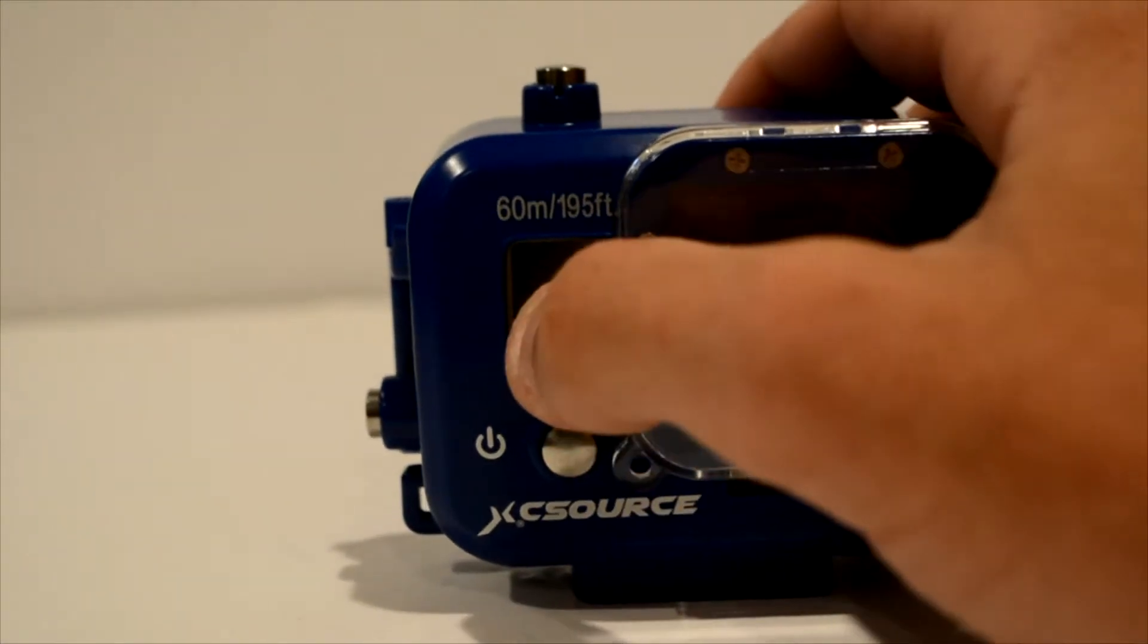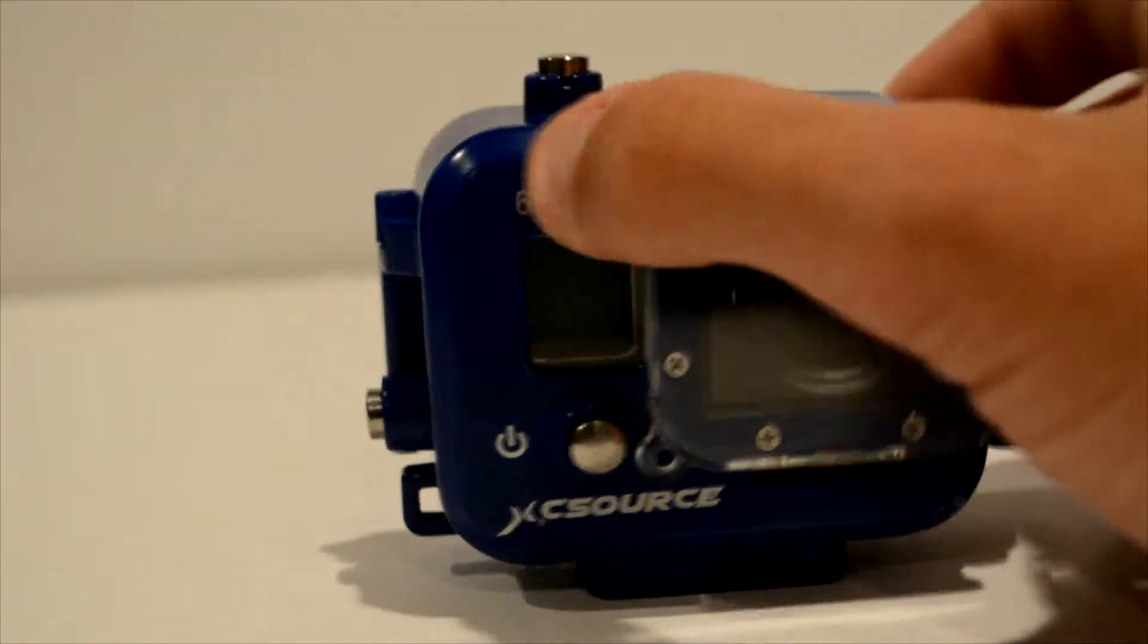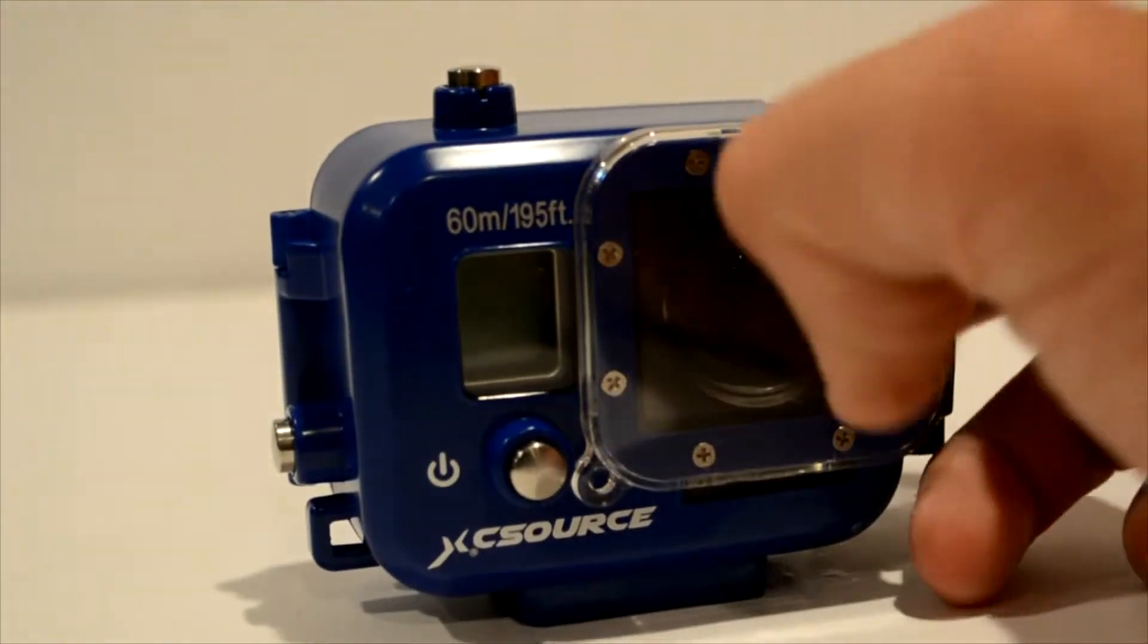So there we go. As you can see, the GoPro is now in there. You can see the little screen that it comes with very easily. The lens right there fits perfectly in here. I have a GoPro Hero 3 Plus Black Edition.